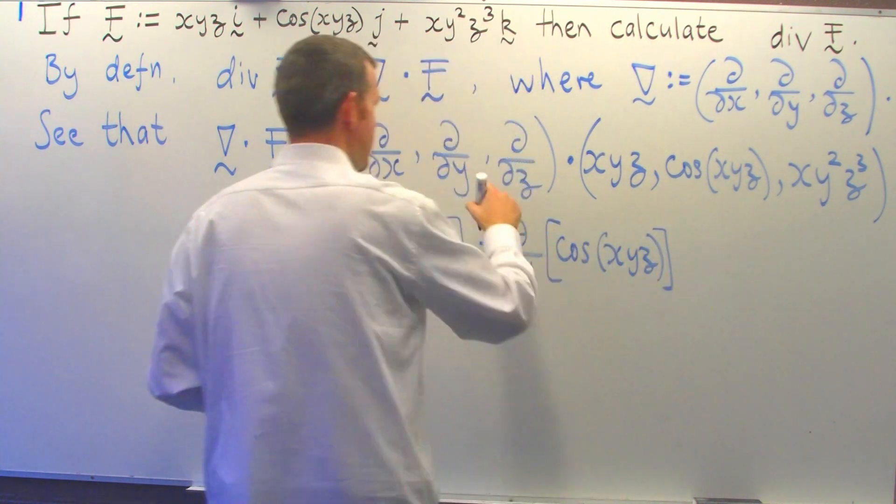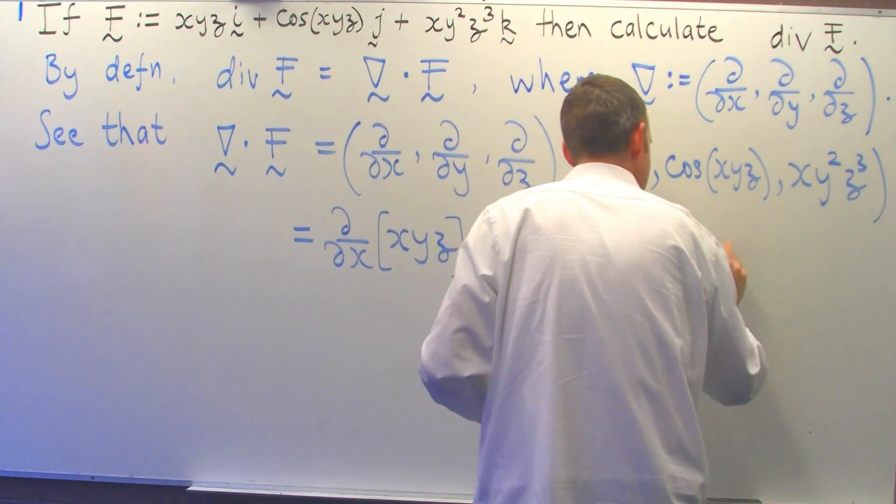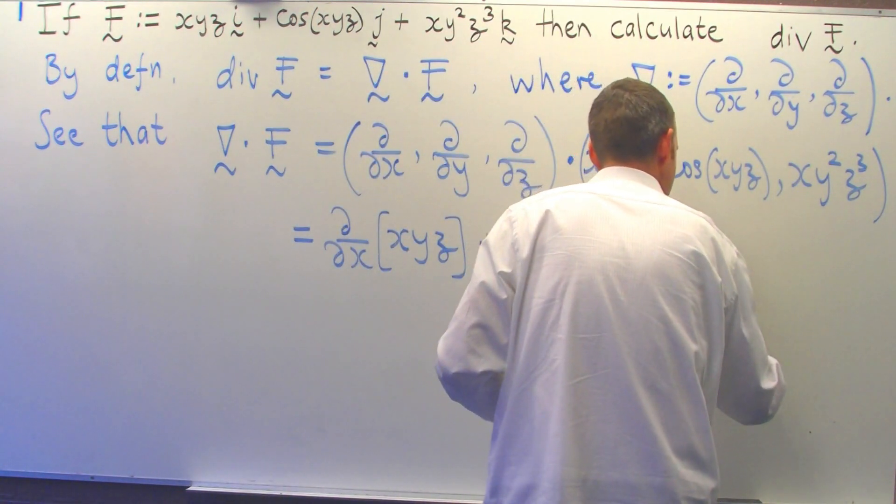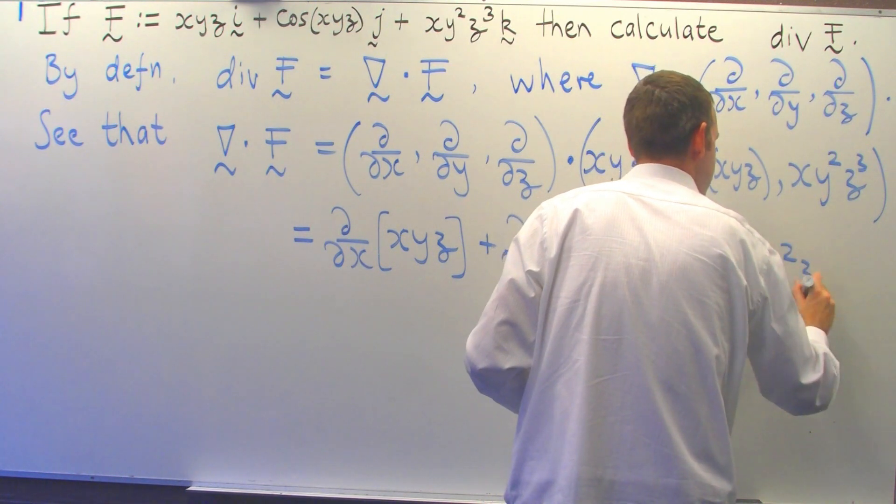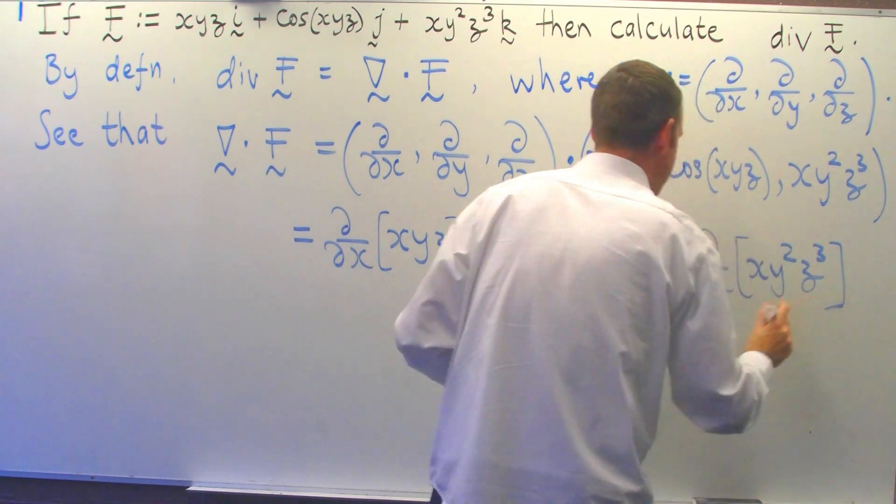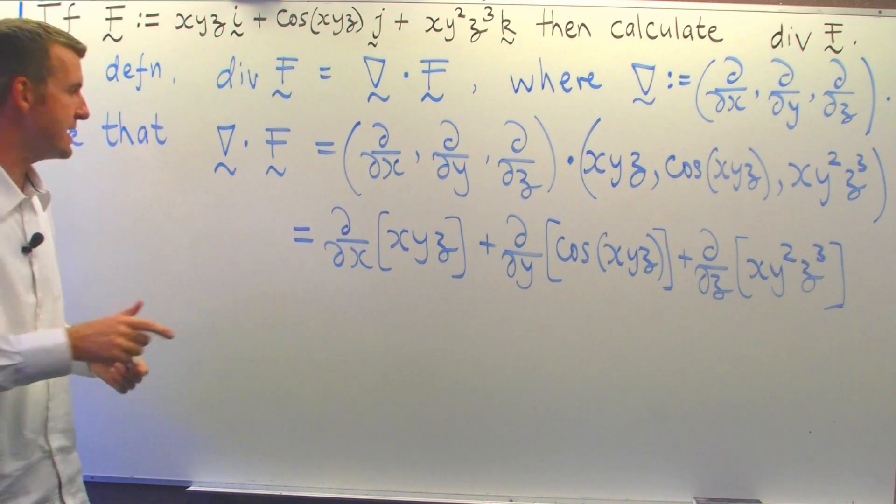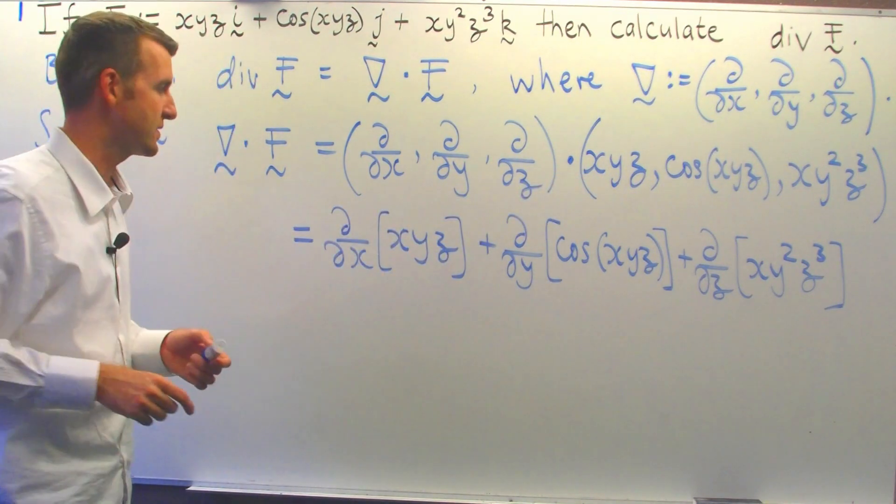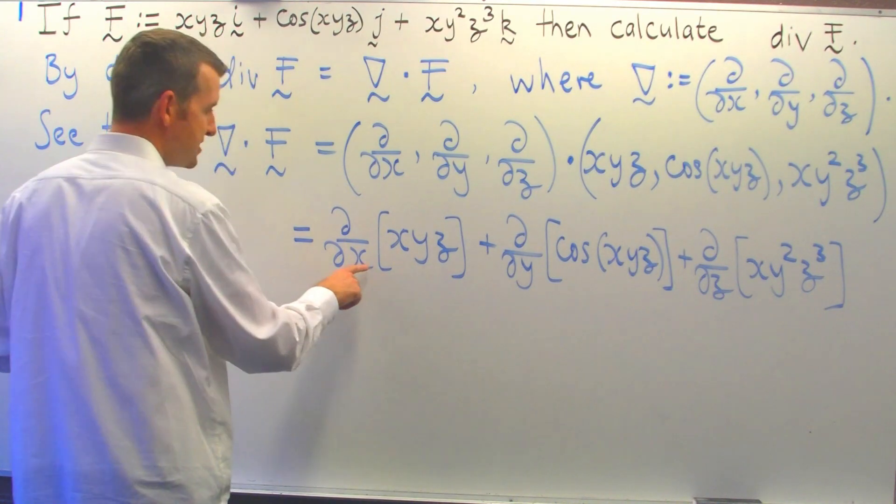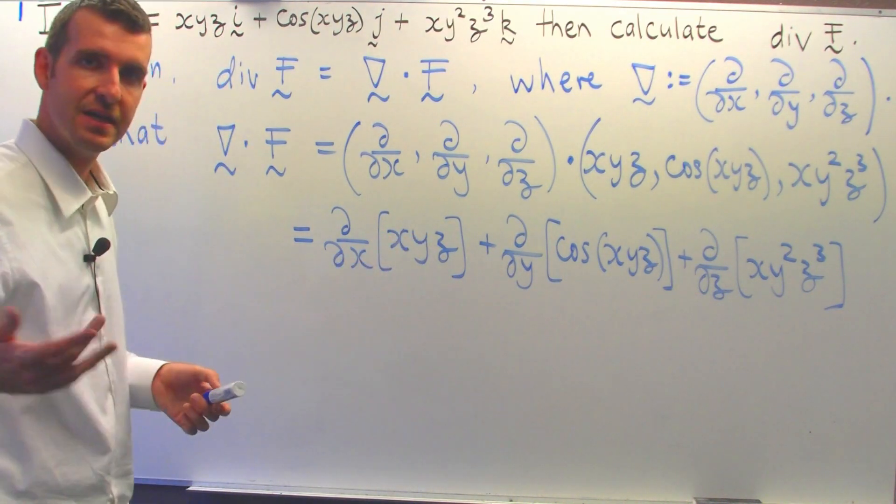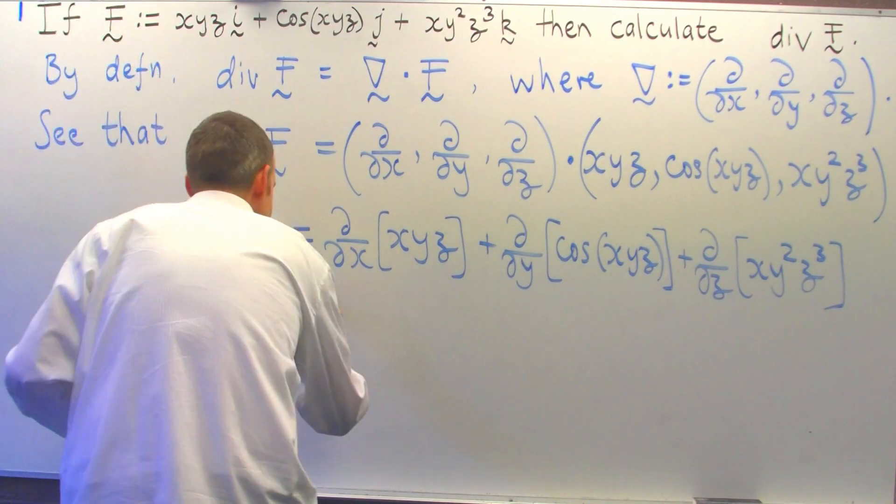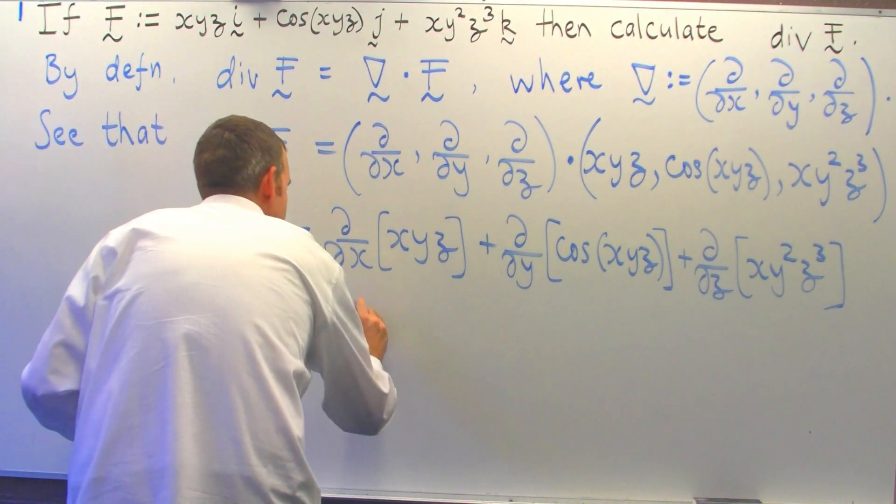D dz of xy²z³. So, all we really have to do now is take these partial derivatives. So, in the first case, we're differentiating with respect to x partially. We imagine all the other variables are constants. So, in this one, we'll get yz.